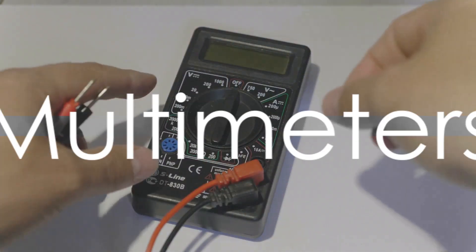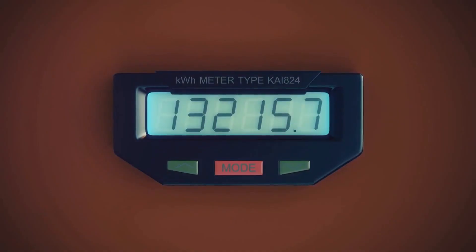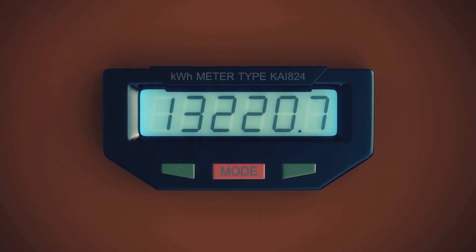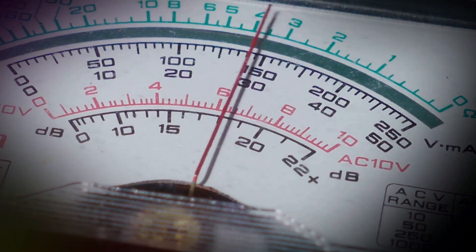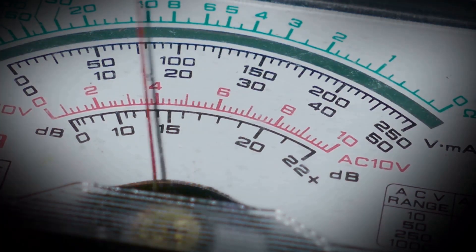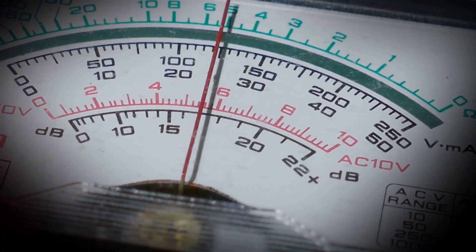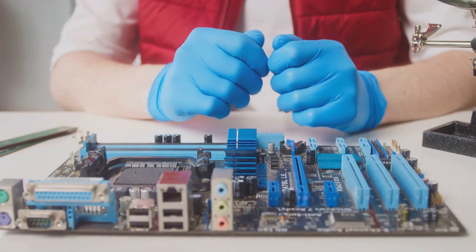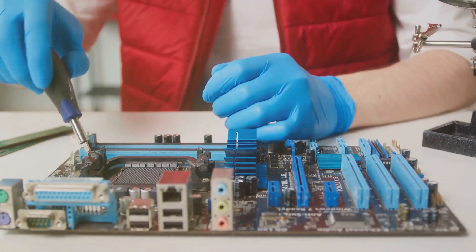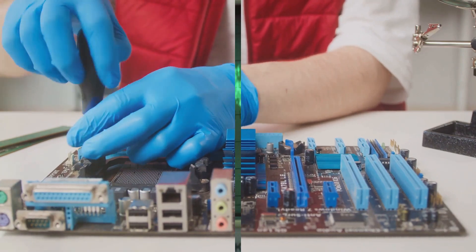One of the most commonly used types of technometers is the multimeter. A multimeter combines various measurement functions into a single device, allowing you to measure voltage, current, resistance, and sometimes even capacitance and frequency. They are incredibly versatile tools that every electronics enthusiast should have in their arsenal.